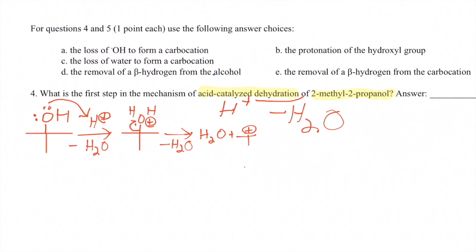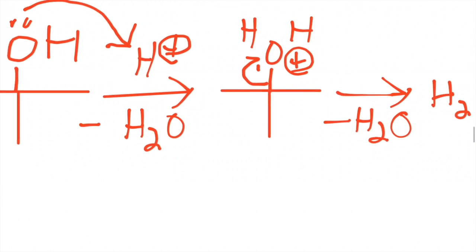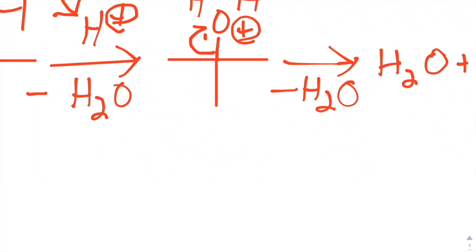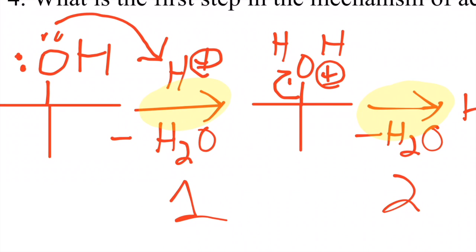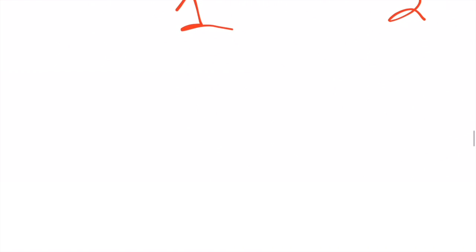So now we want to know what the first step is. The steps of a mechanism correlate to the arrows here. So this arrow right here is one step, and this arrow over here is one step. So we have step one and step two. The first thing we did was protonate this alcohol. Remember that an H+ is the same thing as a proton.